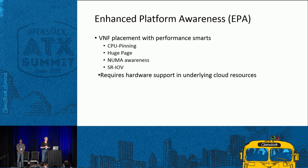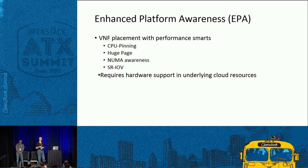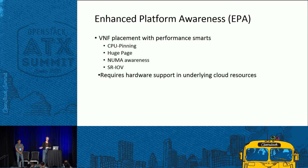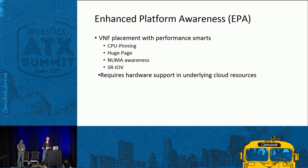Enhanced Platform Awareness (EPA) is a feature made possible by the base TOSCA support. It allows the person writing the template to specify advanced hardware features as requirements for their VNF — things like CPU pinning, huge pages, and SR-IOV. These can now be represented in the TOSCA template, and the orchestrator Tacker or Heat can work together to apply those resources to the VNF. The caveat: your hardware must actually support these features.